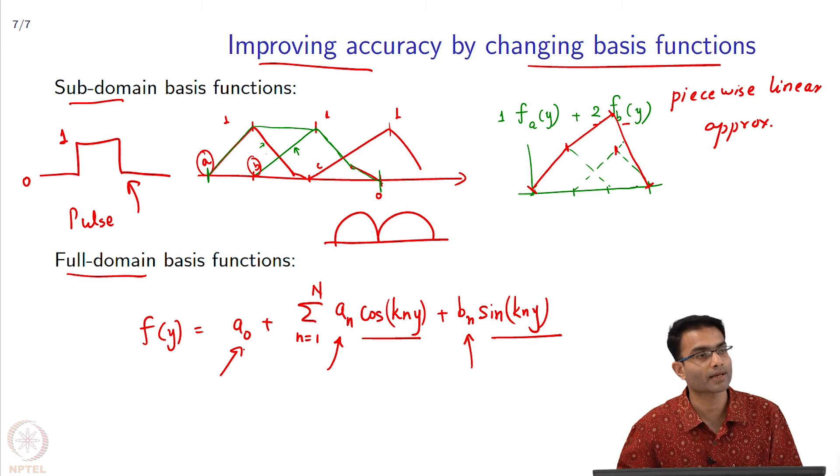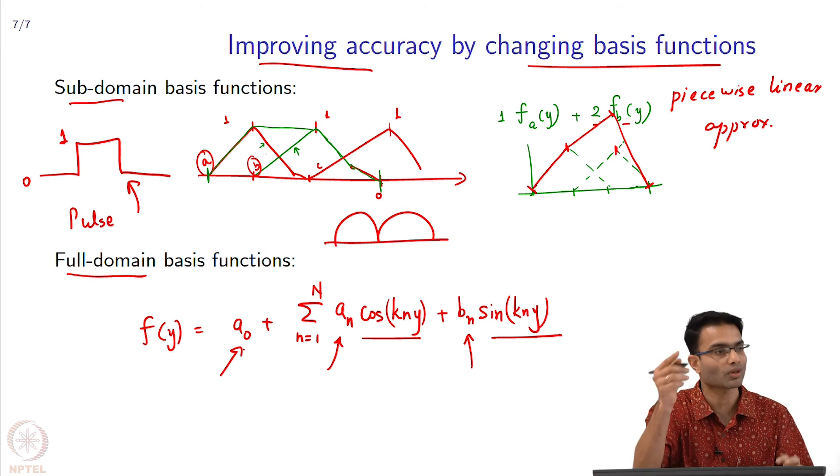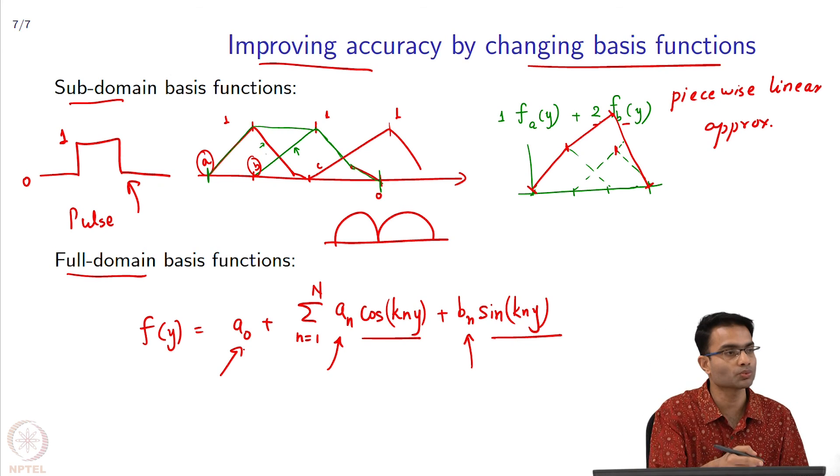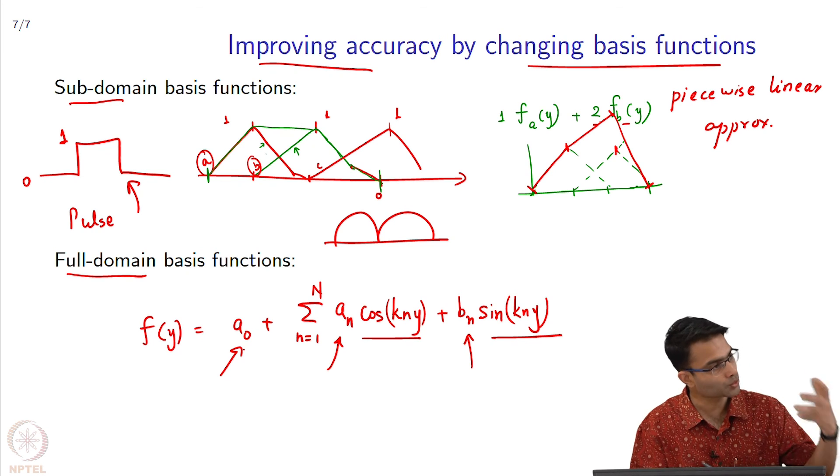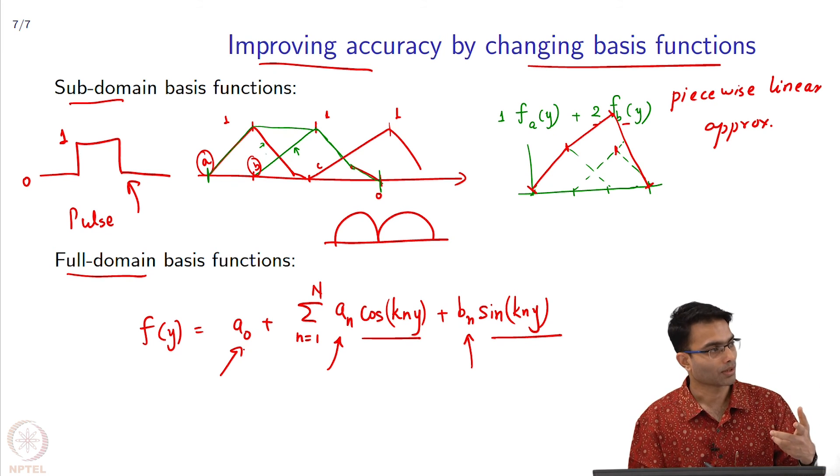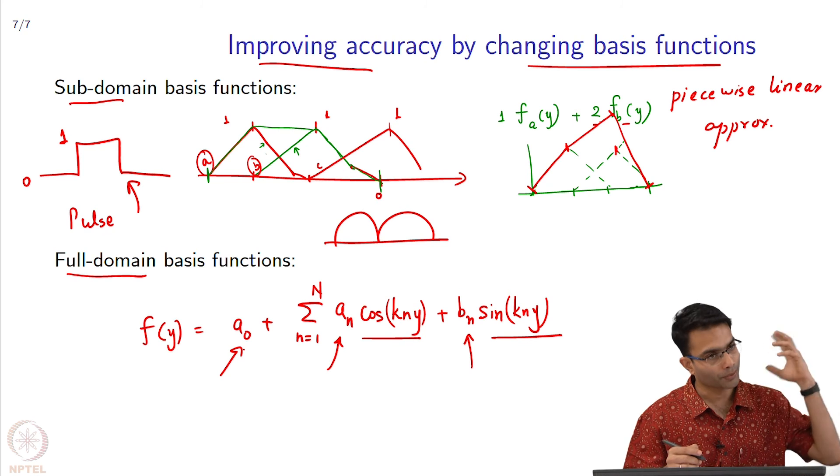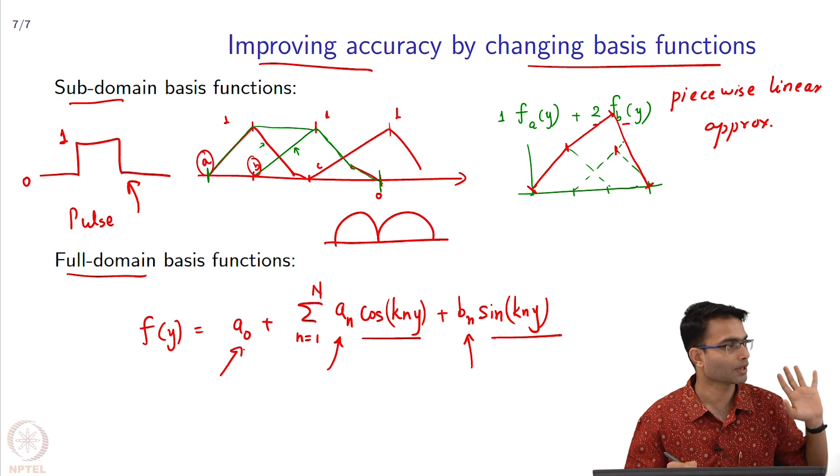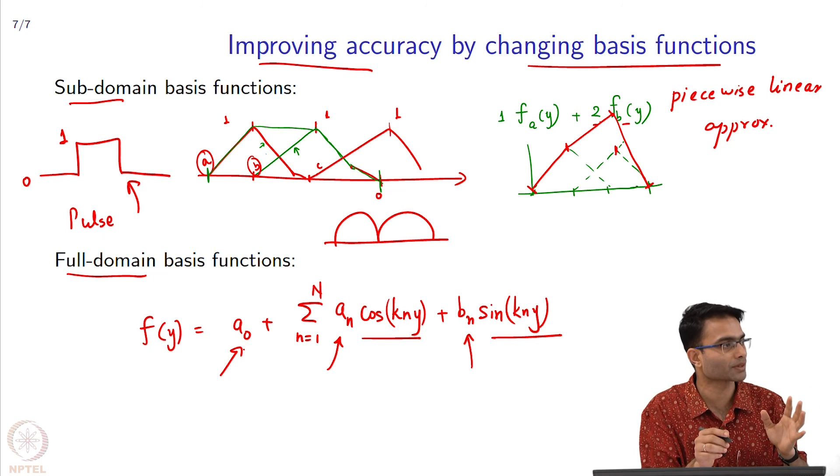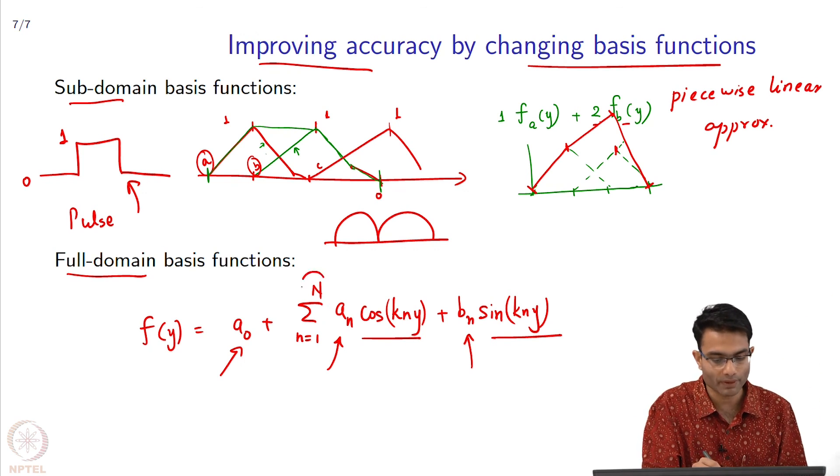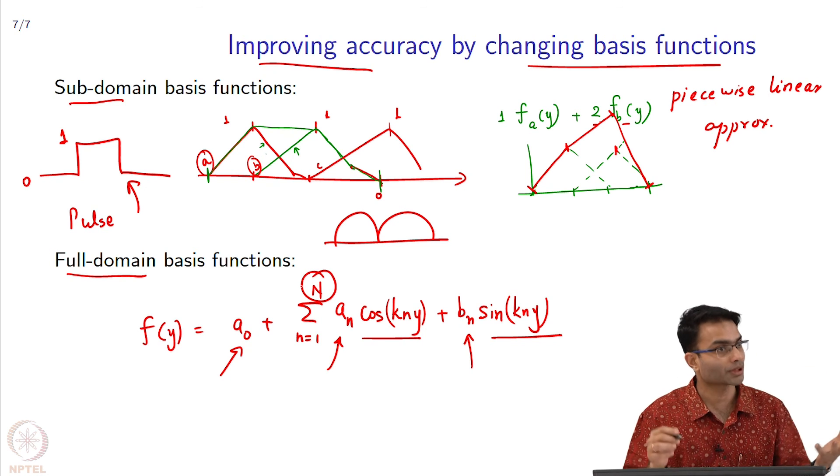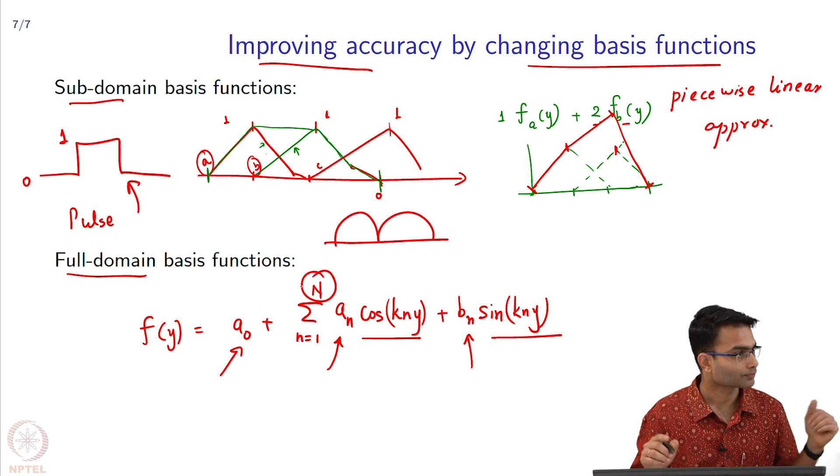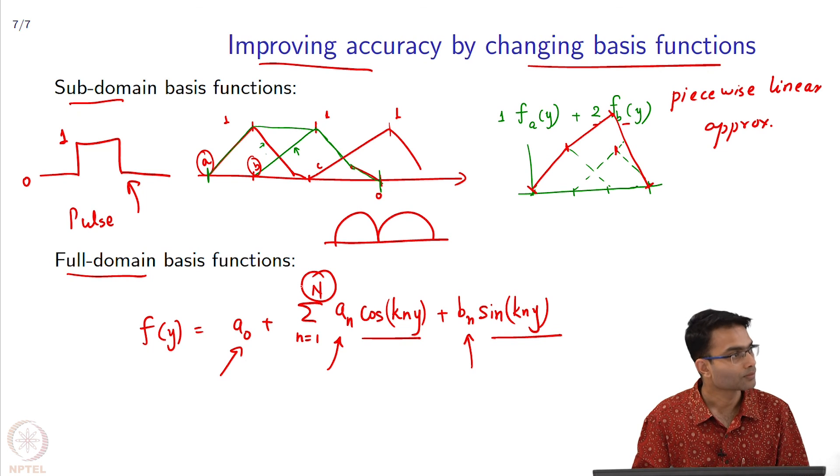If I know beforehand that my solution is going to look oscillatory, then why choose pulse basis function or piecewise linear? May as well choose the function—the basis function—which I intuitively know is going to be close to the basis function. By doing that, I will get away with a small value of capital N if the actual solution is sinusoidal.